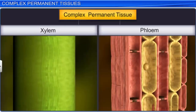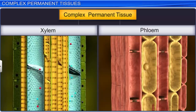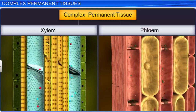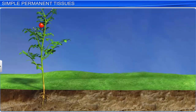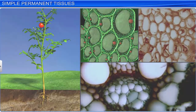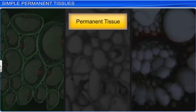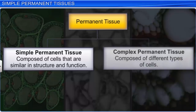Complex permanent tissues are engaged in the transportation of water, minerals, nutrients, and organic substances. Therefore, they are extremely essential for the survival of plants. Permanent plant tissue is a group of cells which are complete in growth and usually incapable of meristematic activity. Permanent tissue is of two types: simple permanent tissues, where all cells are similar in structure and function, and complex permanent tissues, which are composed of different types of cells.